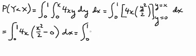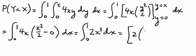2x cubed is what we're left with integrating. And when we integrate that we get 2 times x to the 4th over 4.